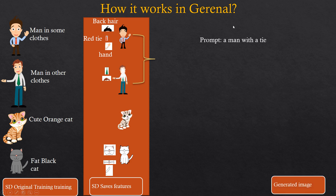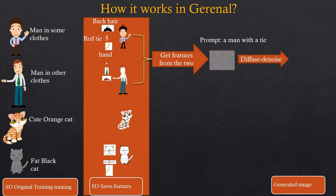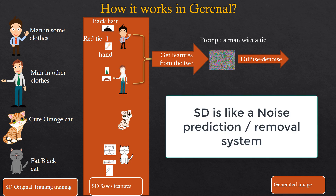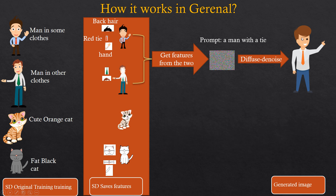So when someone is trying to generate an image using Stable Diffusion — for example, a man with a tie — what it actually does in general is that it combines features from different images. It might combine some features from this image and other features from that image. What we eventually obtain is a diffused image, which is initially generated based on noise. Stable Diffusion is basically like a noise prediction system. It starts with noise and eventually ends up with an image, taking the noise step by step to produce the image, which is a diffusion of various features from the training datasets.